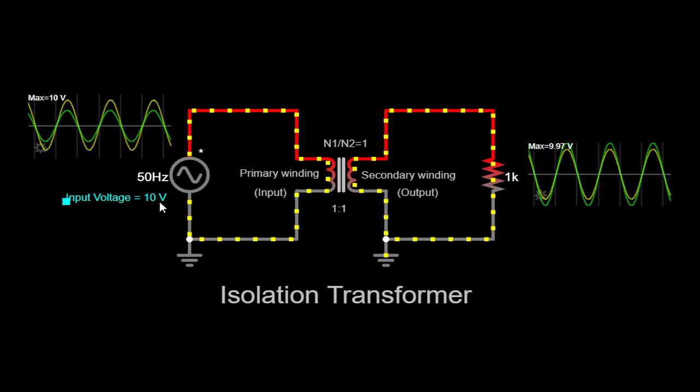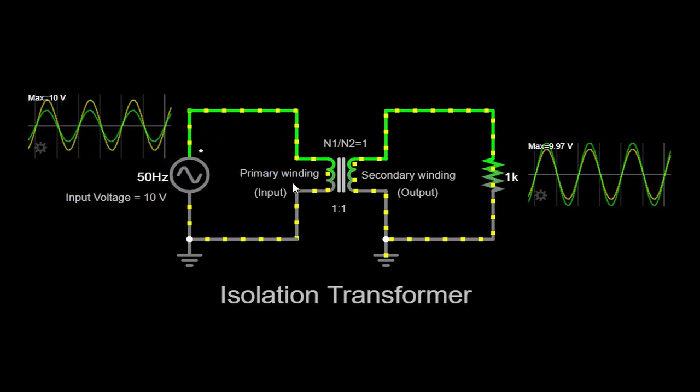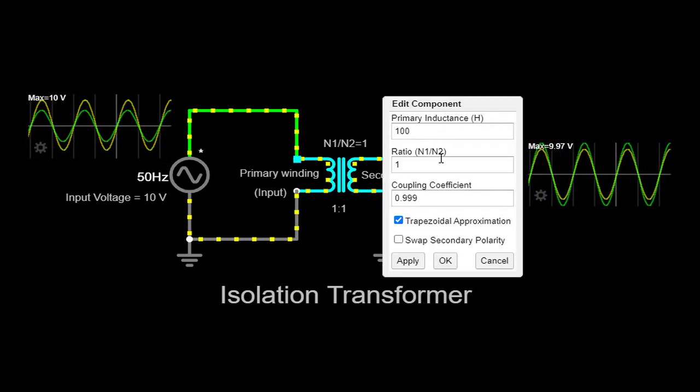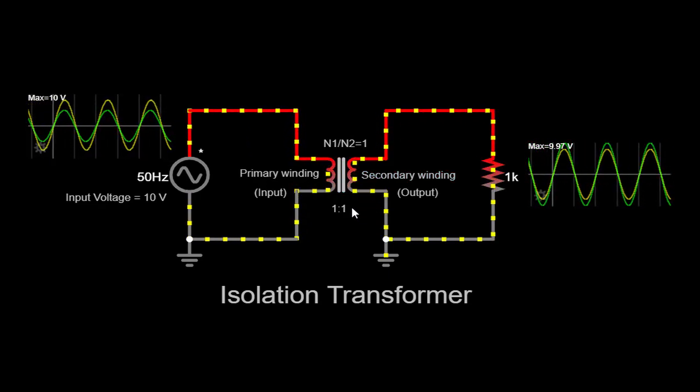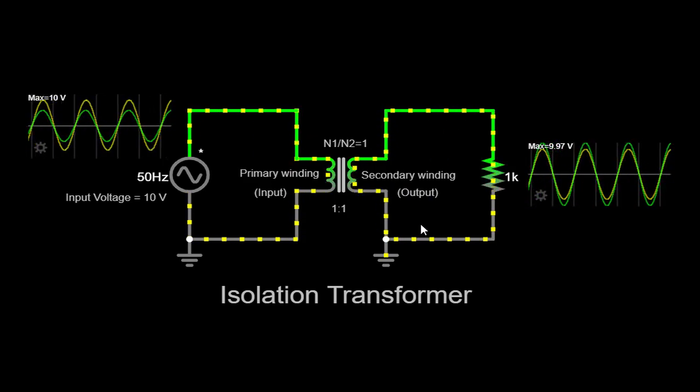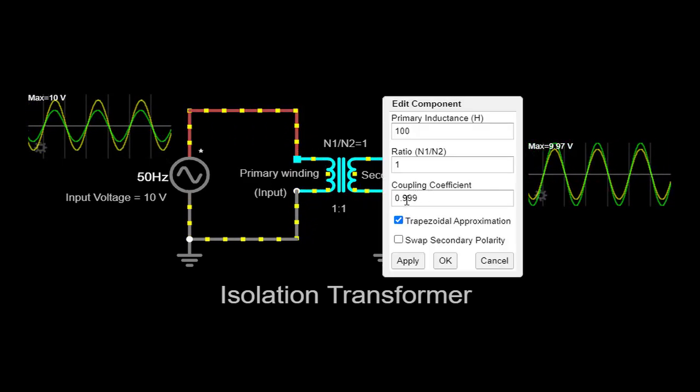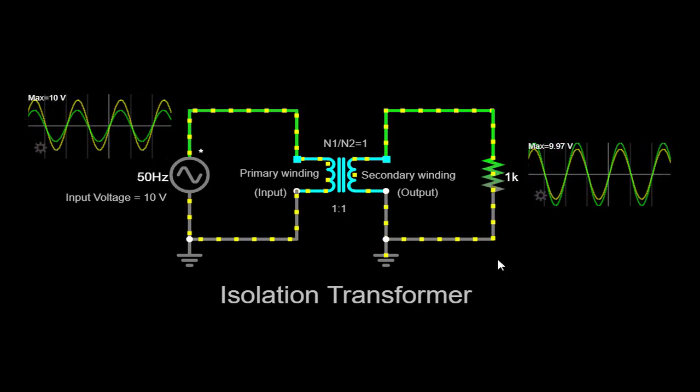Input voltage: 10 volts AC with a frequency of 50 Hz. Primary inductance: 100 henries. Turns ratio N1 by N2 equals 1, indicating equal number of turns on both primary and secondary windings. Coupling coefficient: 0.999, which indicates a high degree of magnetic coupling between the windings.